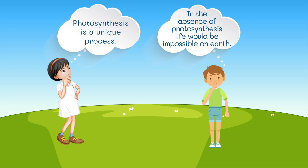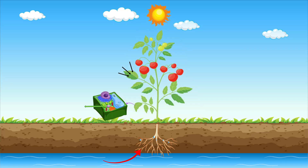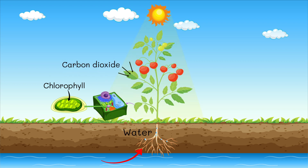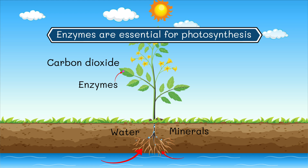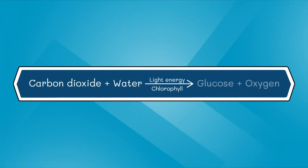In the absence of photosynthesis, life would be impossible on Earth. In the presence of sunlight, the cells of leaves containing chlorophyll use carbon dioxide and water to synthesize glucose during photosynthesis. Enzymes are essential for photosynthetic reactions, and you already learned about the role of minerals in enzyme formation. Photosynthesis can be represented as an equation: carbon dioxide combines with water in the presence of light energy and chlorophyll to give glucose and oxygen.